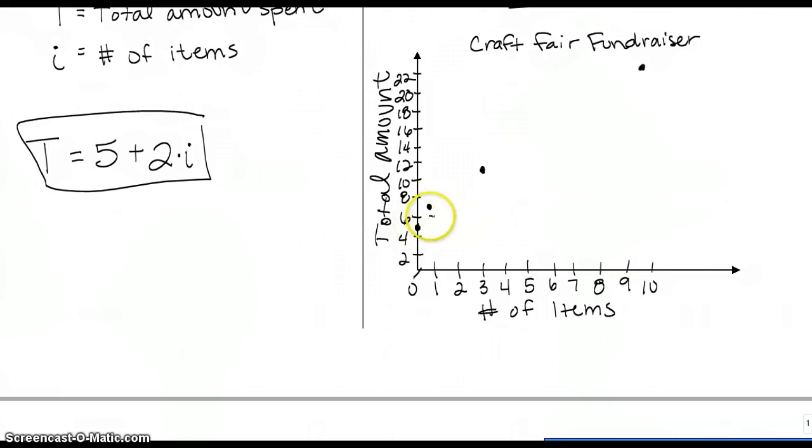This should give us a pretty close to a straight line, depending how evenly your lines were spaced. But other than that, that's how you represent all of your information on a multiple representations graph. I hope this helped. Good luck.